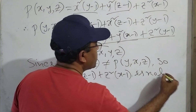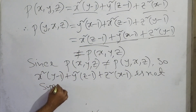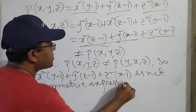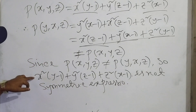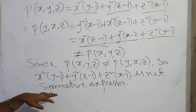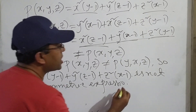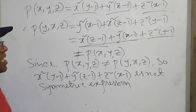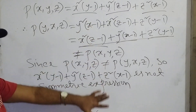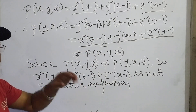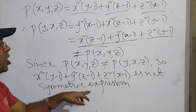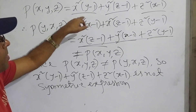Therefore, this expression is not symmetric. It is a cyclic expression but not a symmetric expression. Every symmetric expression in three variables is cyclic, but every cyclic expression may not be symmetric. This example — x squared (y minus 1) plus y squared (z minus 1) plus z squared (x minus 1) — is cyclic but not symmetric.